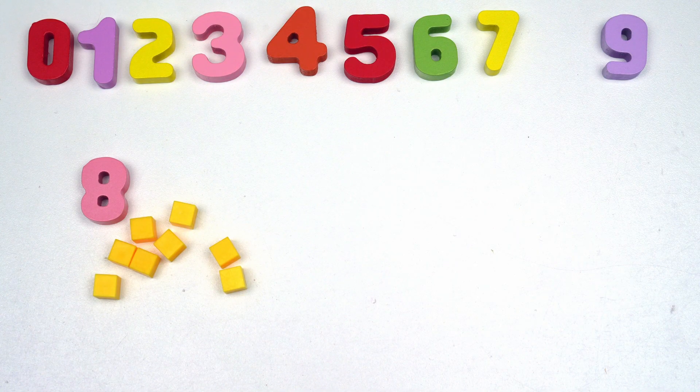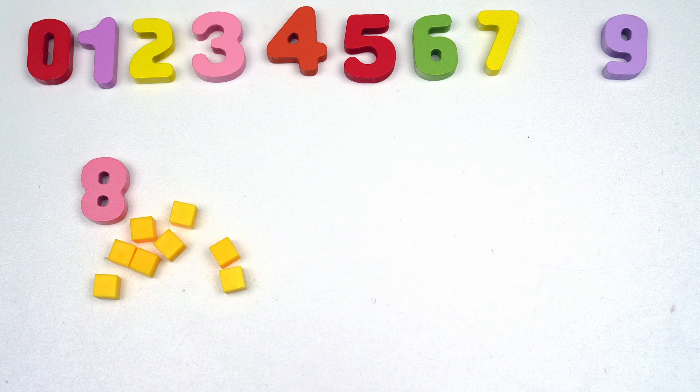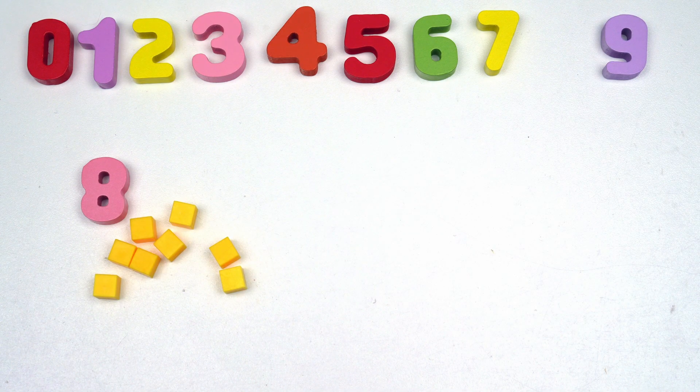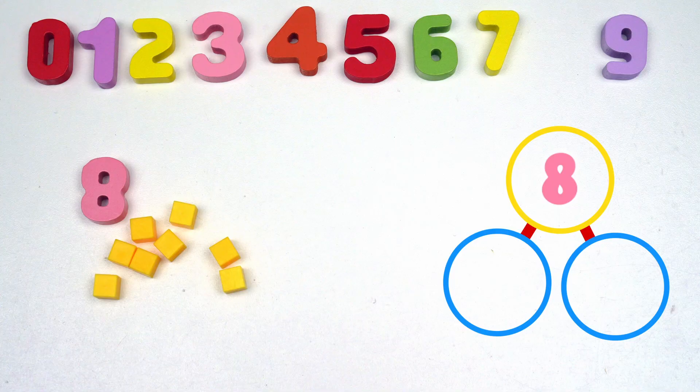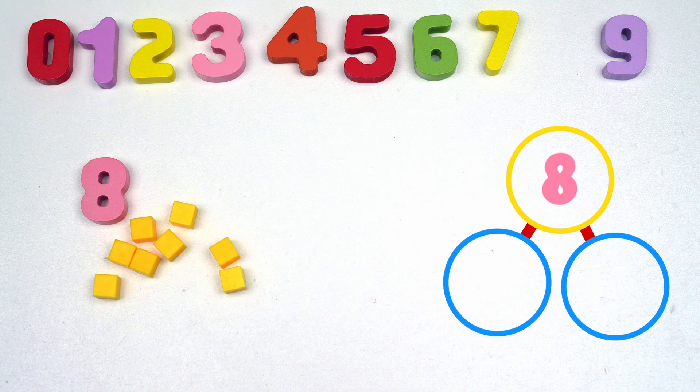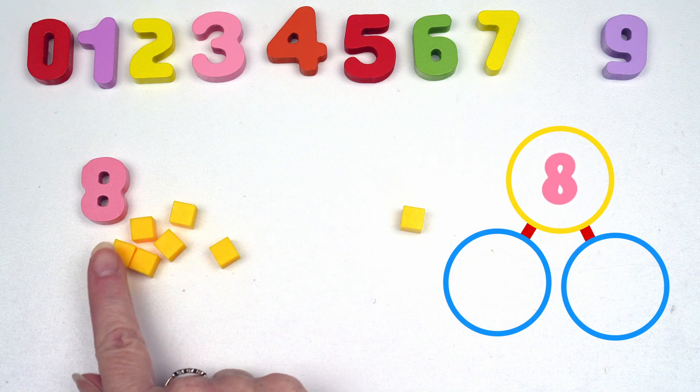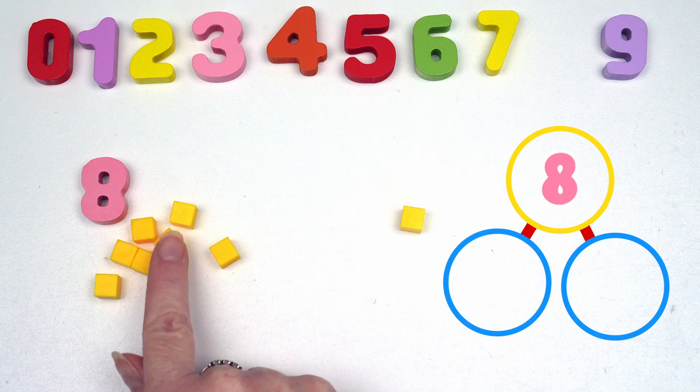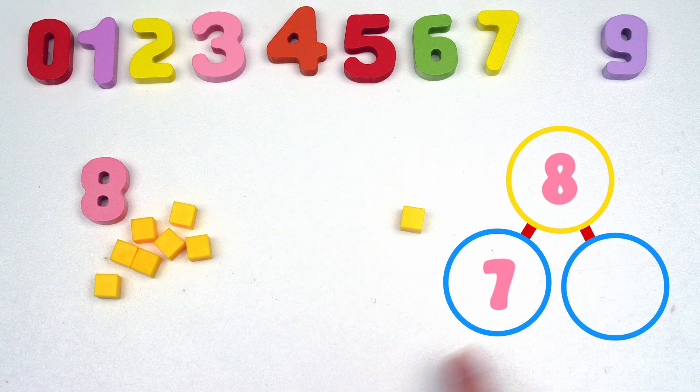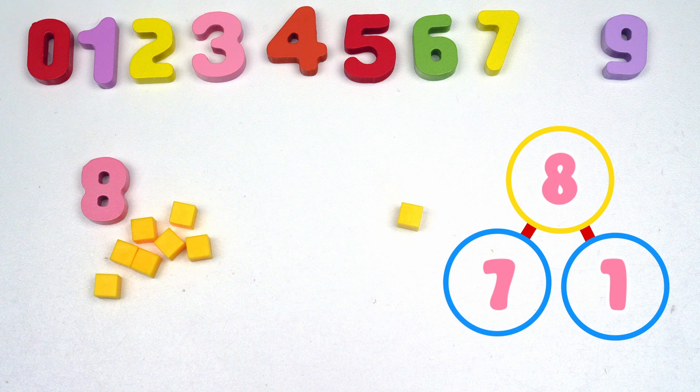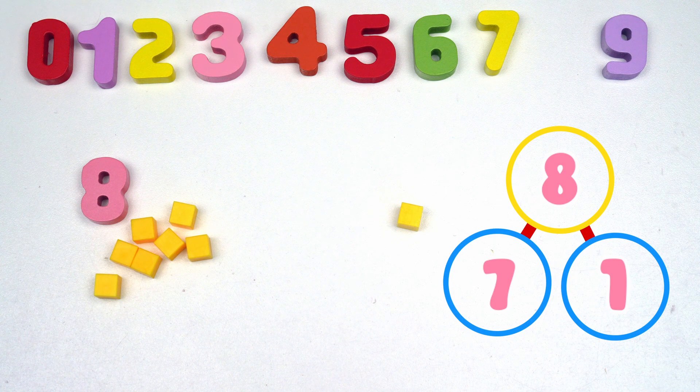Can you think of another number bond for eight? One, two, three, four, five, six, seven, and one makes eight. So seven and one would be a number bond for eight.